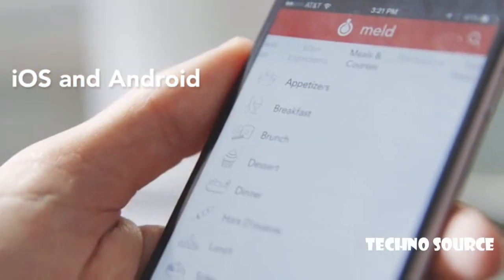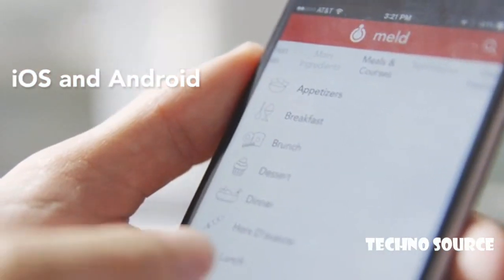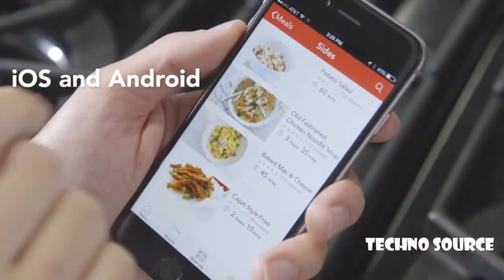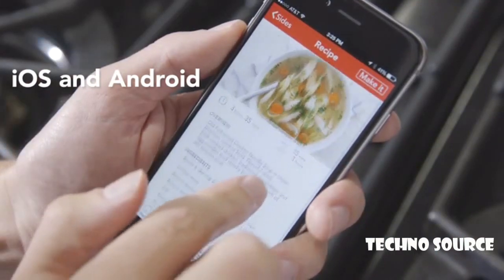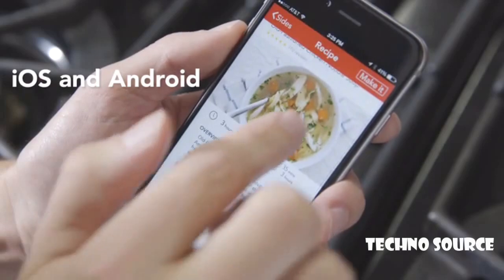This is the Meld app. It contains hundreds of chef-tested recipes that will automatically control the burner and take the guesswork out of cooking. Of course, you can make your own recipes or manually control the knob if you'd like.